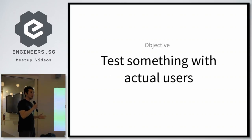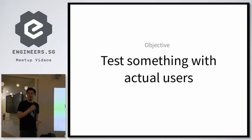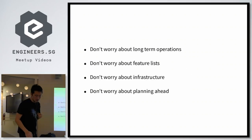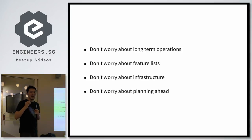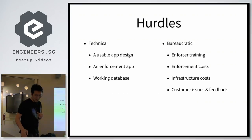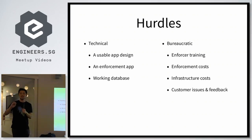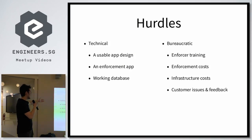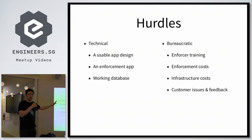Phase one is about getting the basic idea to get someone interested. Phase two is about figuring out what you need to do to test something with actual users. You're still not worried about long-term things like features or infrastructure — you just had an idea and you have no idea whether it's any good. There are a whole bunch of hurdles to get to basic user testing. On the technical side, you can't use Firebase as your UI anymore — you have to build a usable app design and a proper database. But there are also bureaucratic hurdles to overcome even to get something tested live with an actual human being.